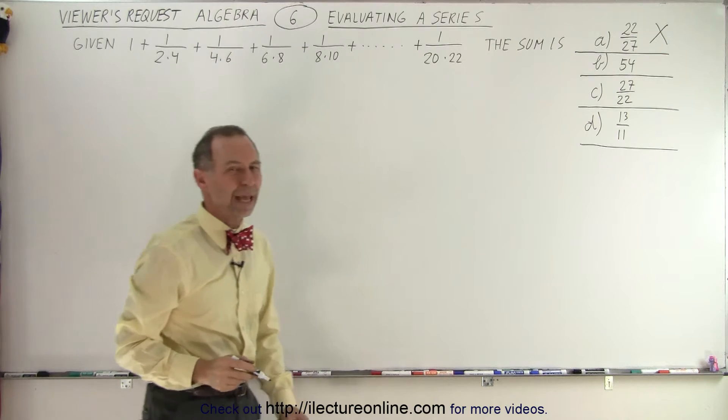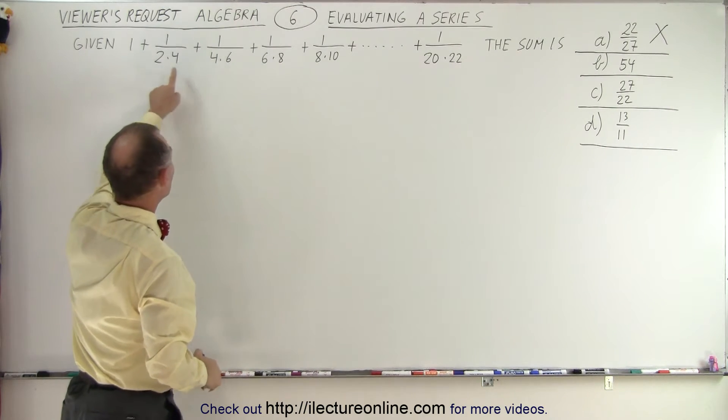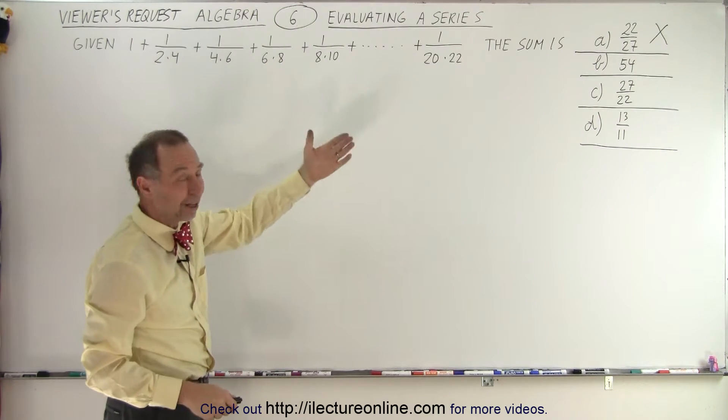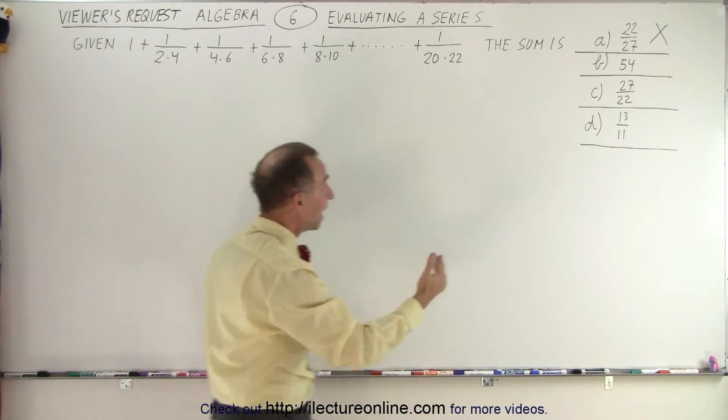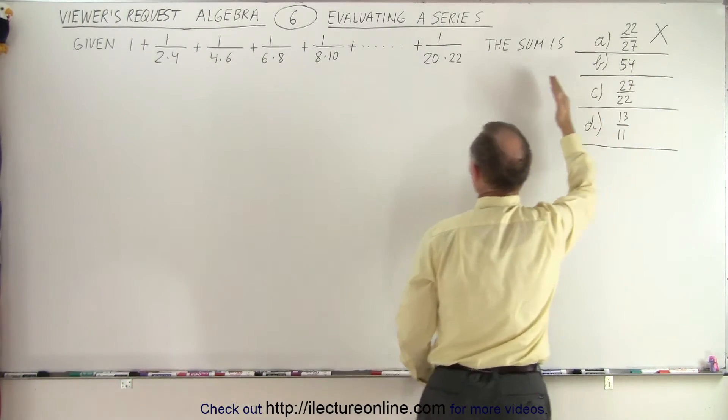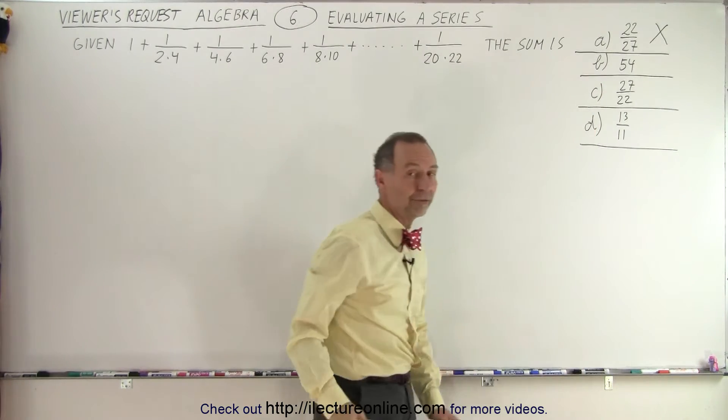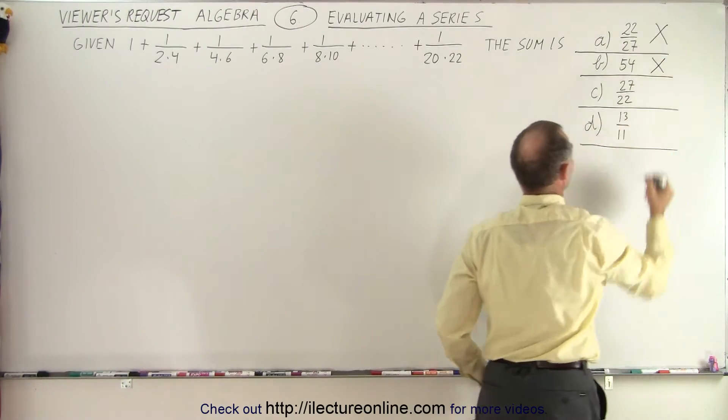Which means that our first choice A is not a good possibility. How about B? Can it add up to 54? Well, you know that each of these terms is less than one because there's one divided by a big number and you begin to divide it by very big numbers. And there aren't that many terms. There's definitely not 54 terms. So even if there were 54 terms, it still wouldn't add up to 54. So 54 is definitely not a good possibility either.